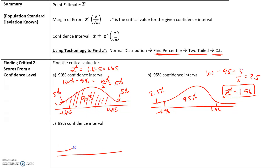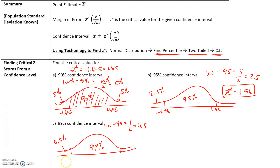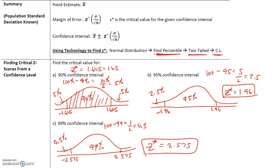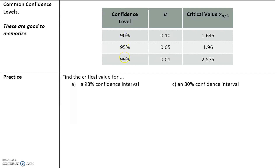For a 99% confidence interval, the middle area is 99%, leaving 1% split between two tails — 0.5% in each tail. Entering this in the normal distribution calculator gives negative 2.575 and positive 2.575, so the critical value is 2.575 or 2.58. Here are the three most commonly used confidence levels: 90% gives Z-star of 1.645, 95% gives 1.96, and 99% gives 2.575.